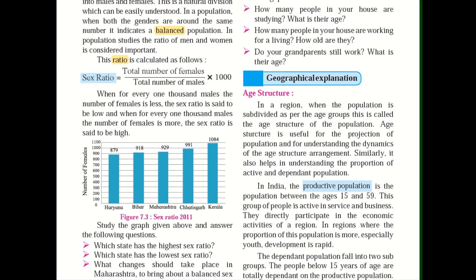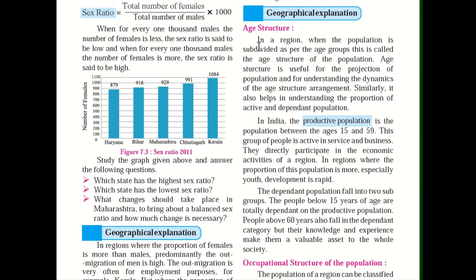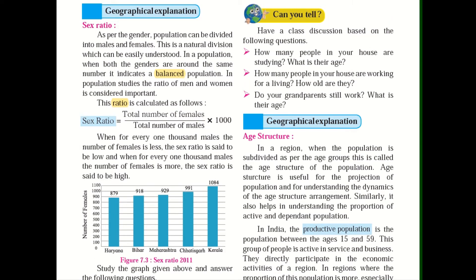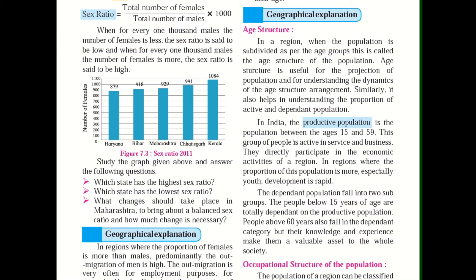Come to your right hand side — you have something called age structure. How are we going to study the age structure? Consider: how many people in your house are studying and what is their age? How many people are working for a living and how old are they? Do your grandparents still work and what is their age? When the population is subdivided as per age group, this is called the age structure of the population.